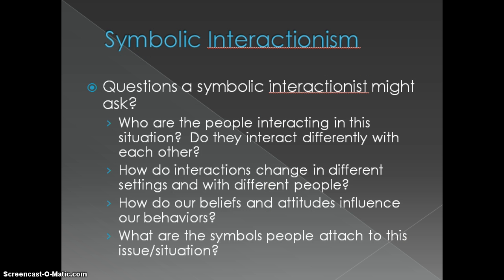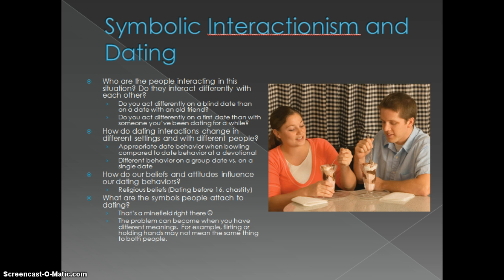Now let's move on to our third major theory: symbolic interactionism. Here are some questions to ask: Who are the people interacting in this situation? Do they interact differently with each other? How do your interactions change in different settings and with different people? How do our beliefs and attitudes influence our behaviors? And what are the symbols people attach to this issue? These questions are fundamentally different from functional and conflict theory because functional and conflict theory are macro theories — they look at the behavior of large groups and structures in society — while symbolic interactionism is much more concerned with individuals and small groups. Let's look at dating.